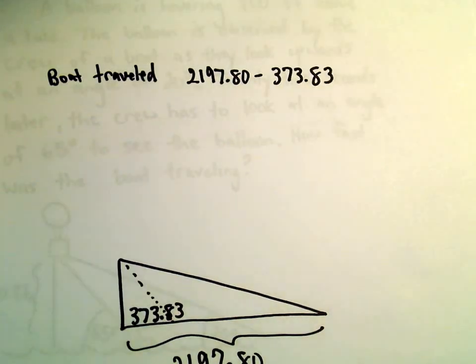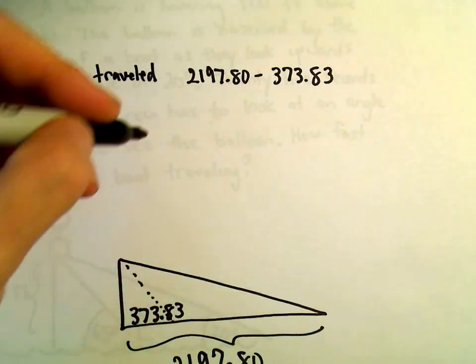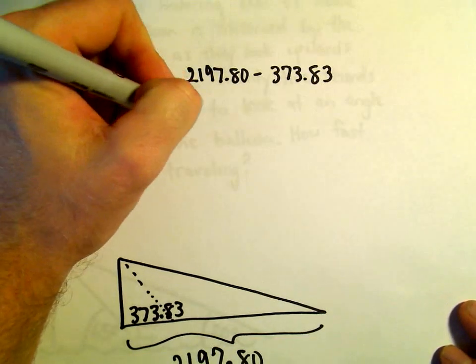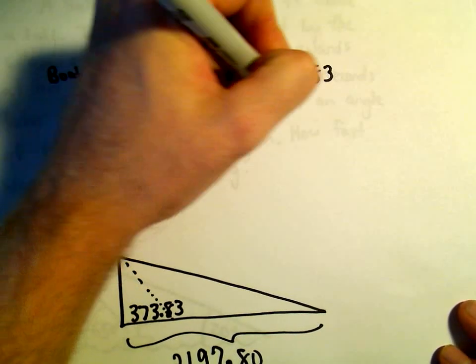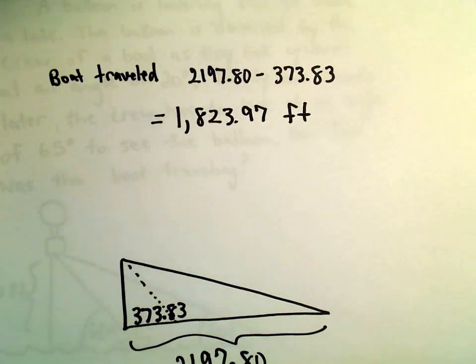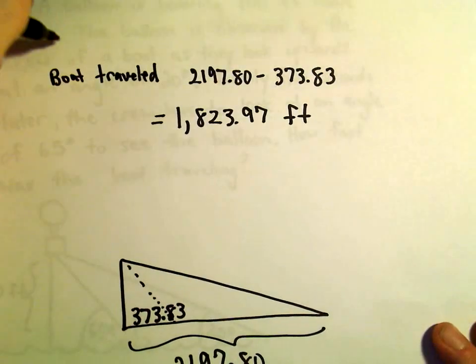So 2,197.80 minus 373.83, all this is in feet. Let's do the old arithmetic here. So 2,197.80, and if we subtract away 373.83, I'm getting this to be 1,823.97 feet. That's the distance that the boat traveled.